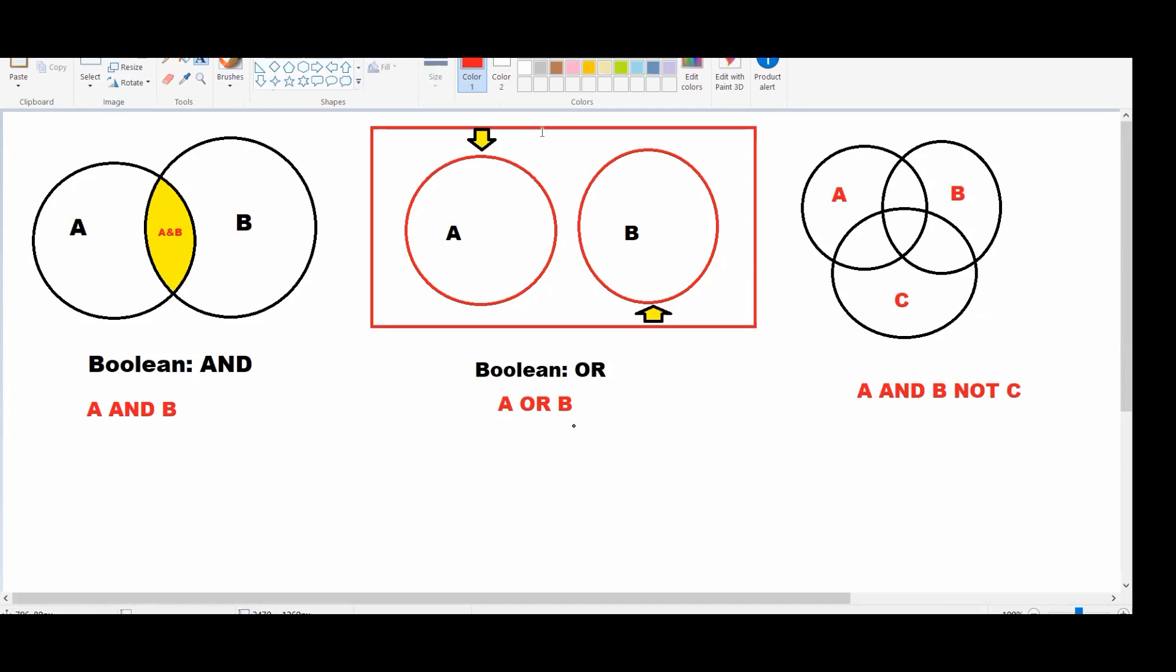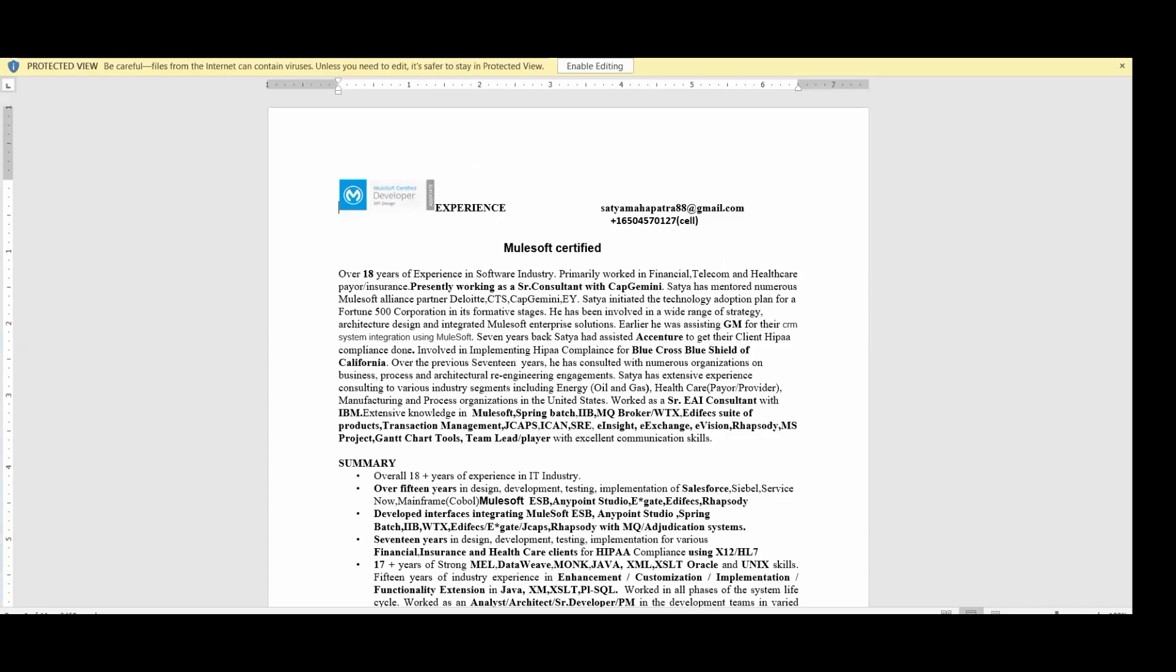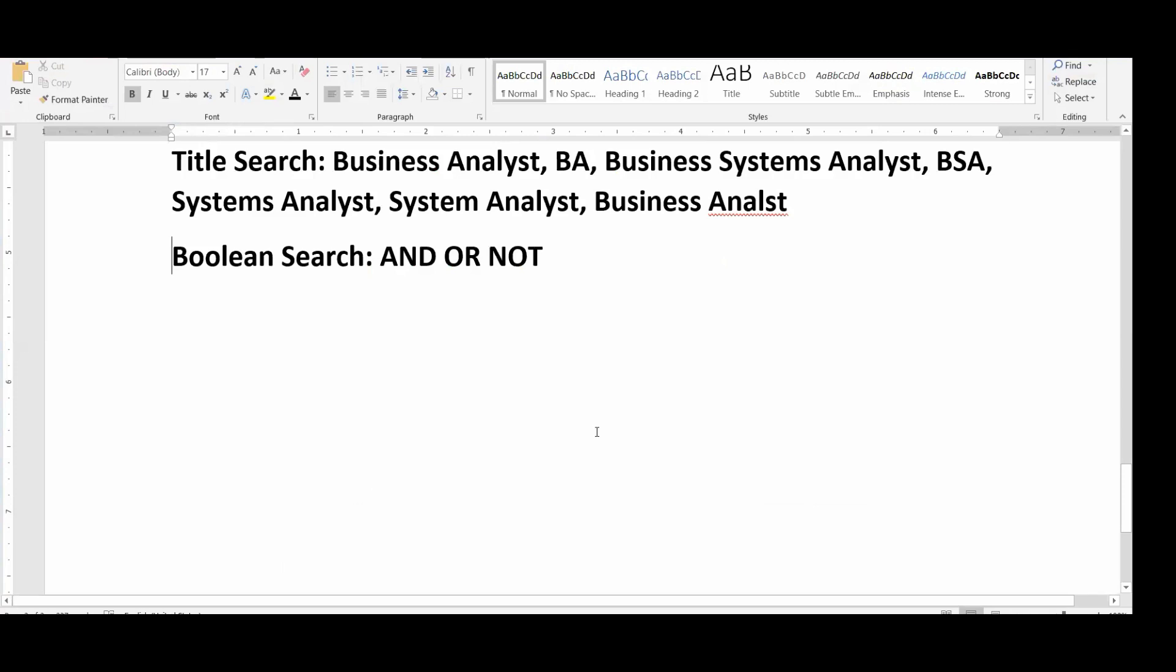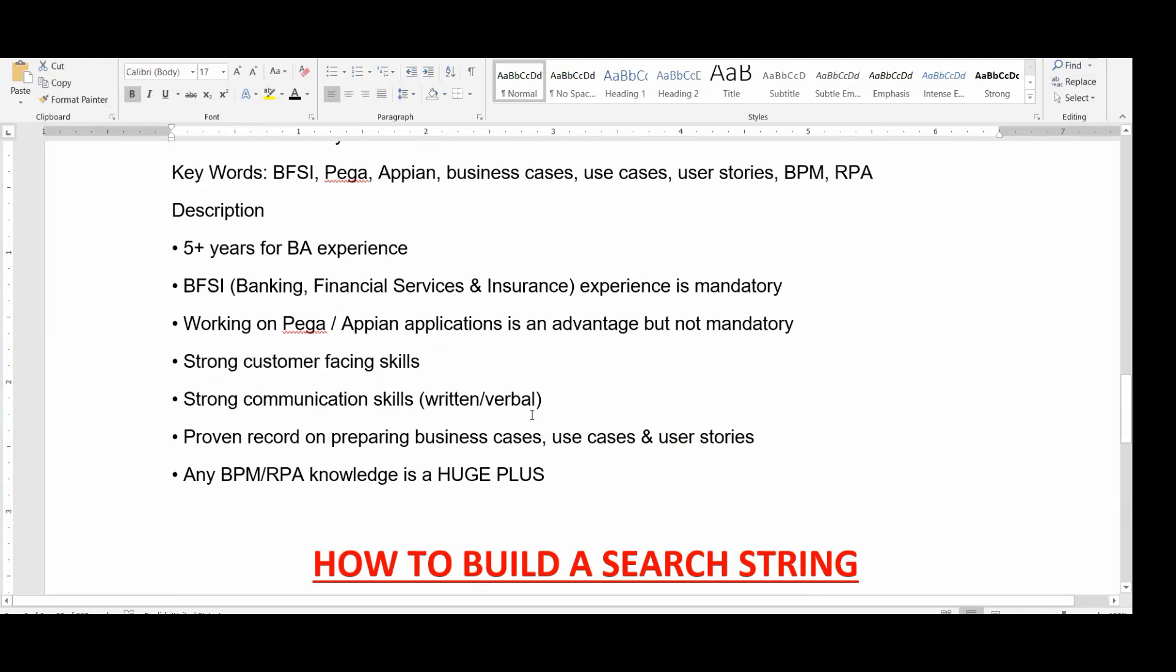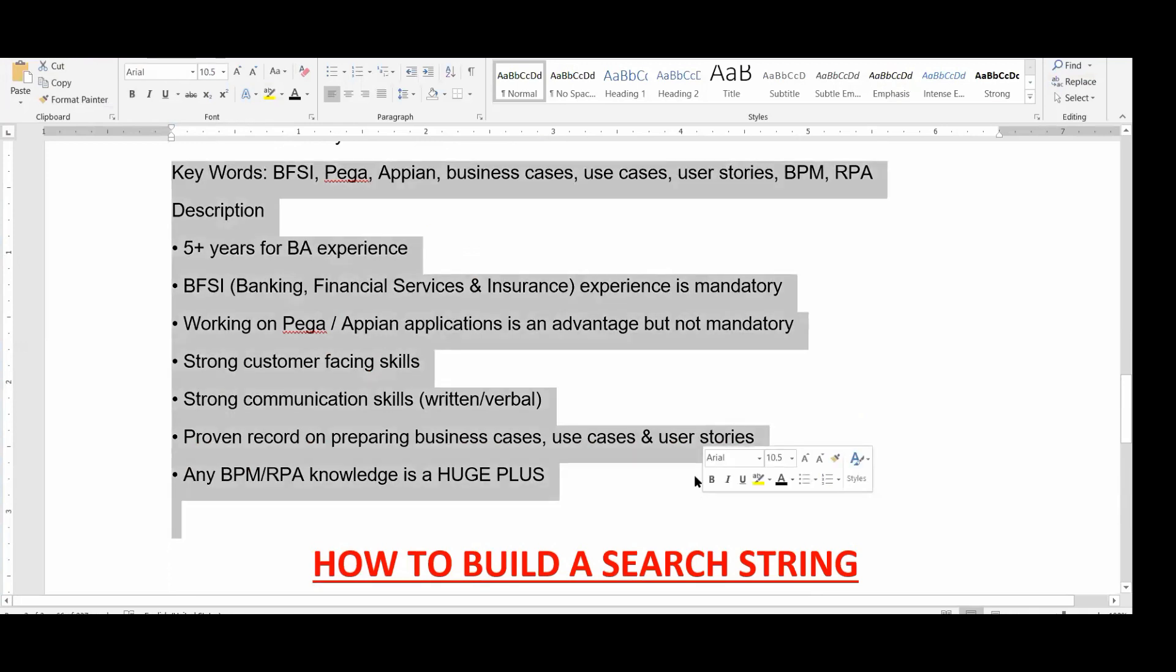Okay, very good. So now this is called a Boolean string. Now you need to use this logic to understand how your string is going to fetch the candidate the client is asking for.